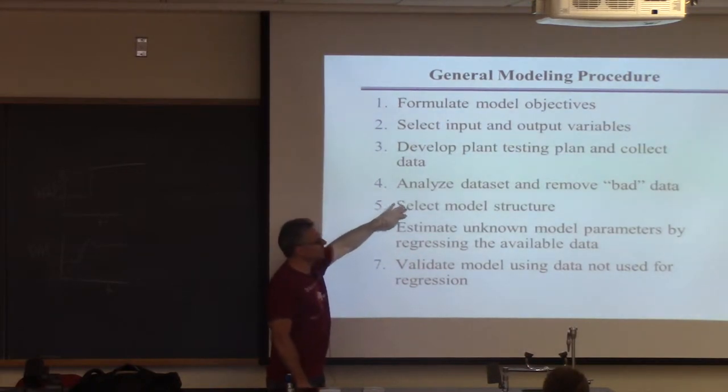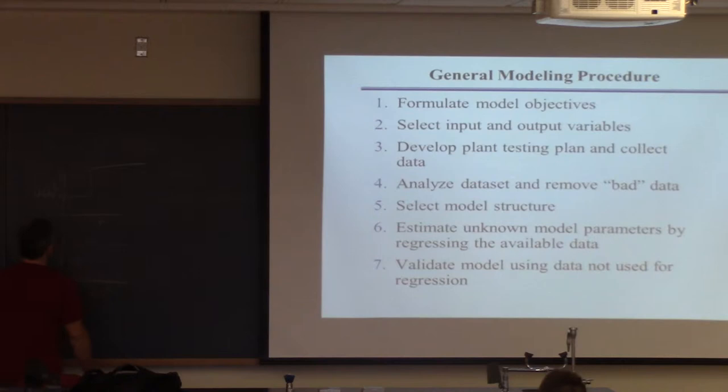Once you have the data, then you have to do something called model structure selection. So let's say you looked at this model here. You're trying to say, what kind of model might work here? Well, the first thing you should conclude is the system looks like it has a time delay, because I changed the input here, and it didn't change for 20 minutes or whatever it might be. Then you're like, oh, system oscillated. It's got to be at least second order, because no first order system can do that. So I would try second order plus time delay.